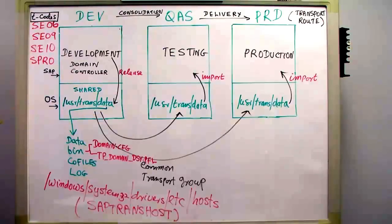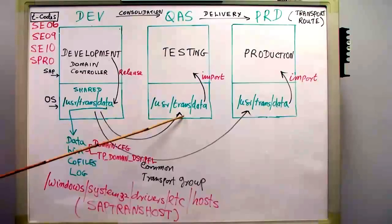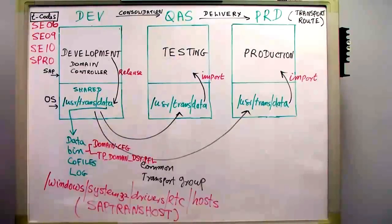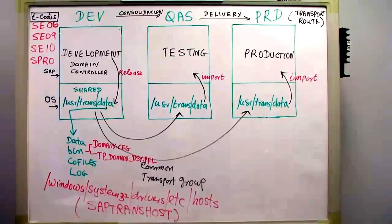To import in the testing system, I type STMS, click on the truck icon in the top left corner, and double-click on QAS. I refresh the screen and see all the transports, then adjust and import them into the testing system. Testing is done, and if all requirements are met, it can proceed.